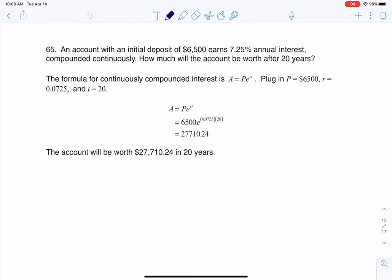Here we were told we have an account with some initial money that we're putting in of $6,500. We've got this great interest rate at 7.25% and it's compounded continuously. So how much will this account be worth after 20 years?